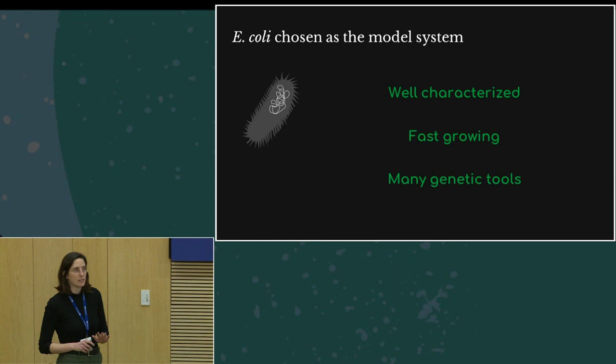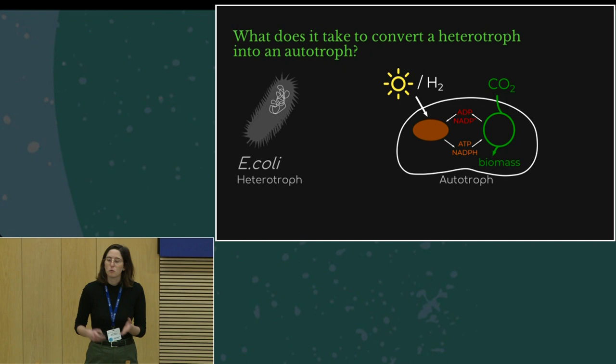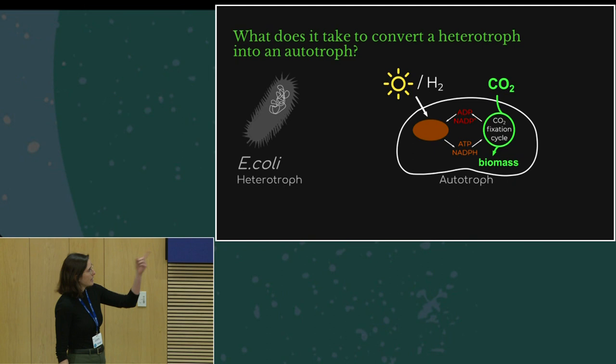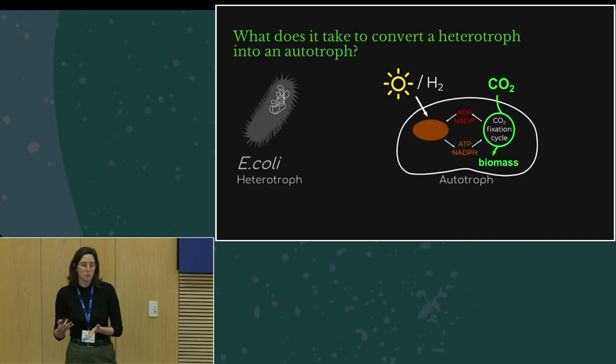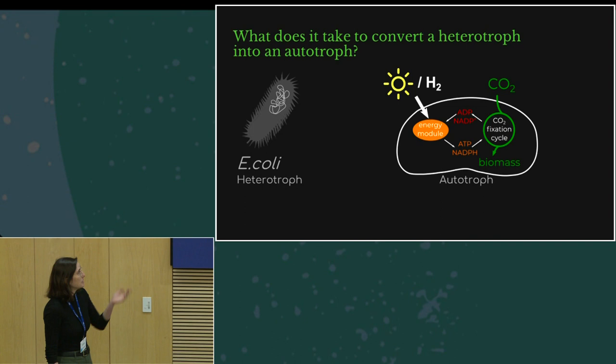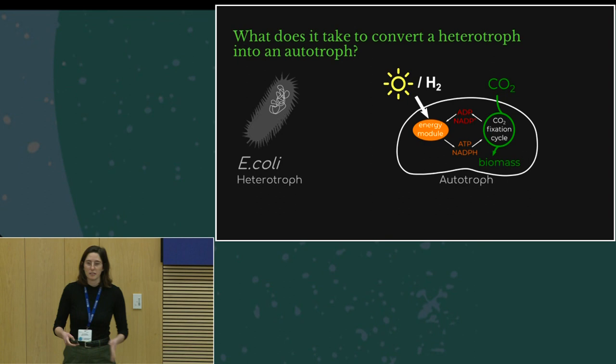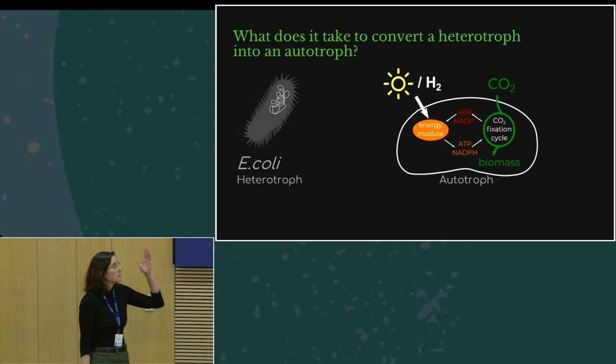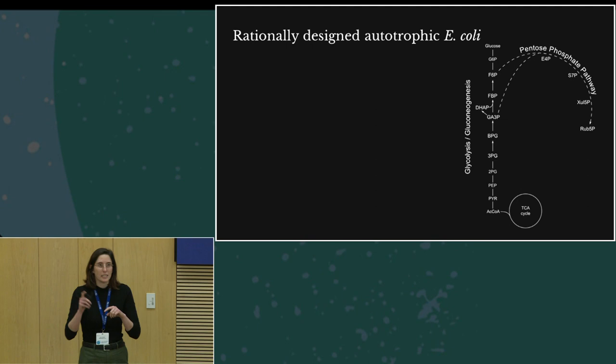We started by looking at natural autotrophs. What do they have that our E. coli is missing? The first thing is that they have a CO2 fixation cycle, a chain of reactions, this is enabling them to integrate carbon dioxide into their biomass. The second thing they have is an energy module that is decoupled from the carbon fixation cycle, meaning that the carbon comes from one source and energy comes from a different source—let's say the sun or hydrogen.